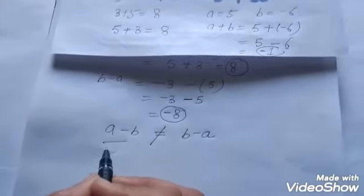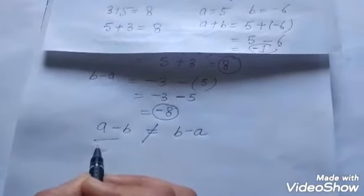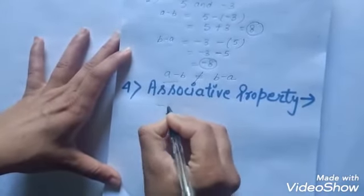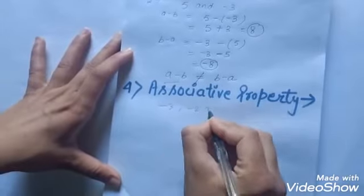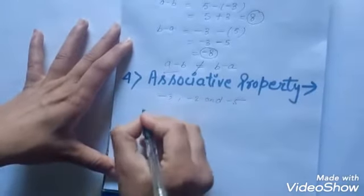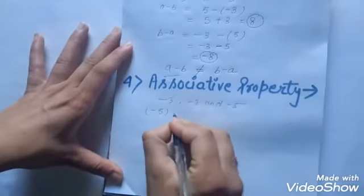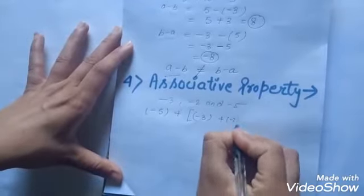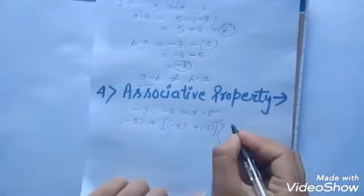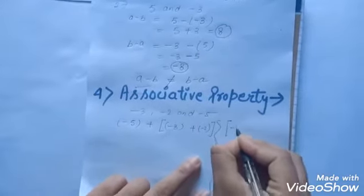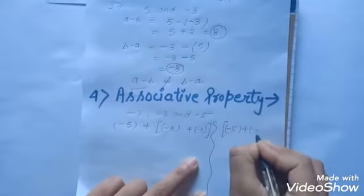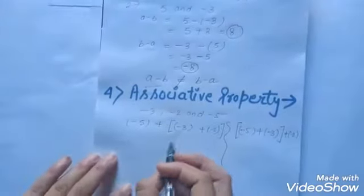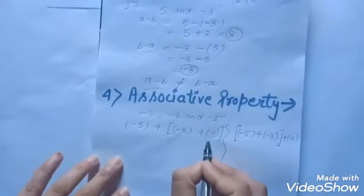Now take at least five different pairs of integers and check this. The next property is the associative property. Consider integers minus three, minus two, and minus five. Look at: minus five plus (minus three plus minus two) and (minus five plus minus three) plus minus two. In the first sum, minus three and minus two are grouped together; in the second, minus five and minus three are grouped together.